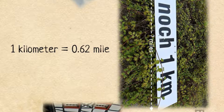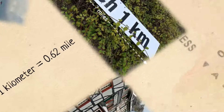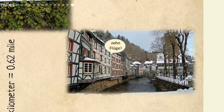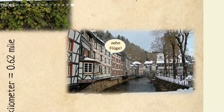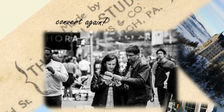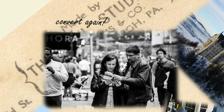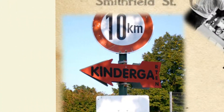Okay, but converting between languages can actually be harder than converting with math. For example, what if over in Germany you heard someone say 'zehn fluege'? You'll probably have to look this up too — you'd have to find out that 'zehn' means 10 and 'fluege' means flights. But if we saw a sign that says 10 kilometers, we wouldn't have to look it up to figure out how many miles this is, because we know ratios.